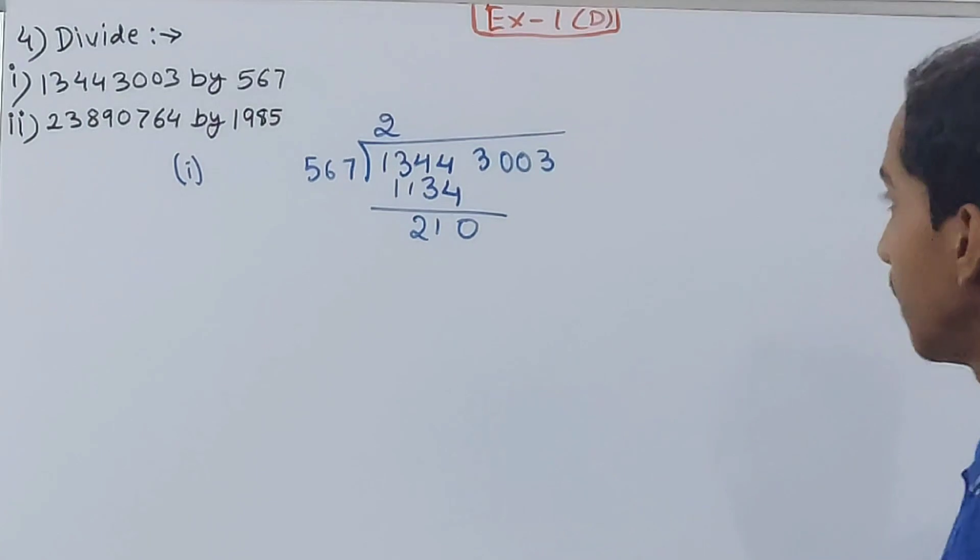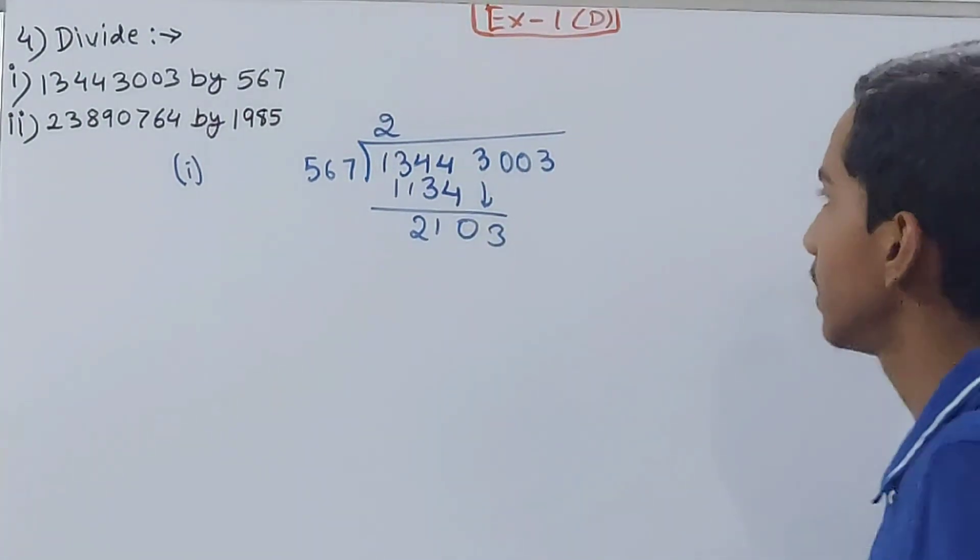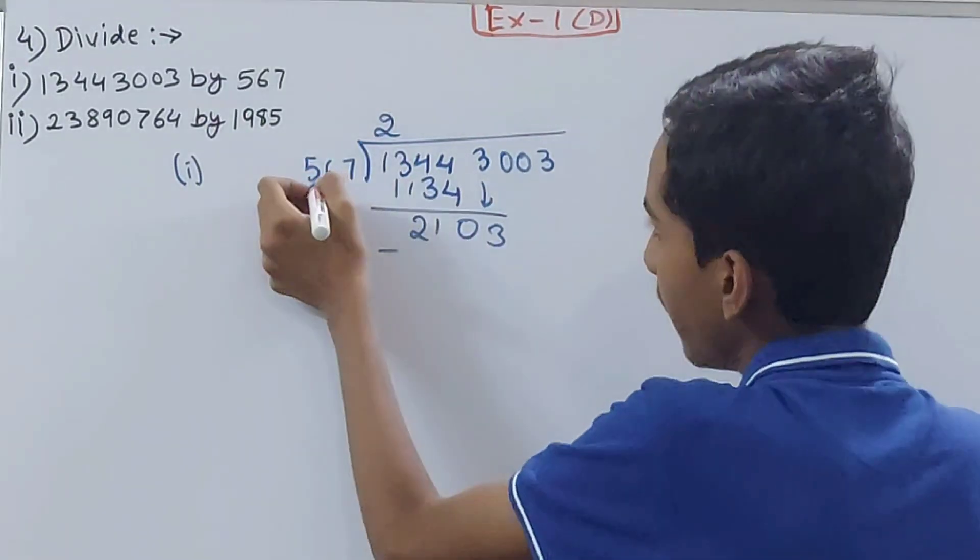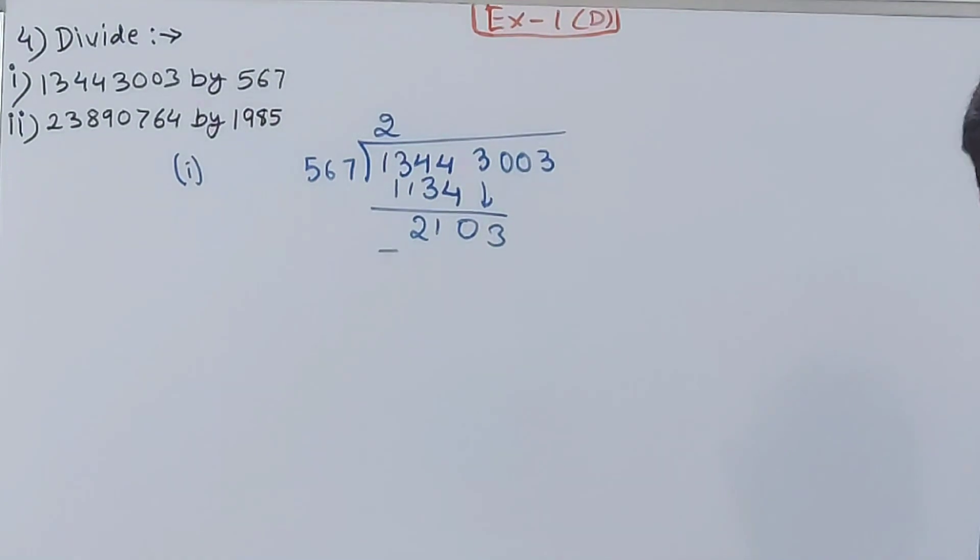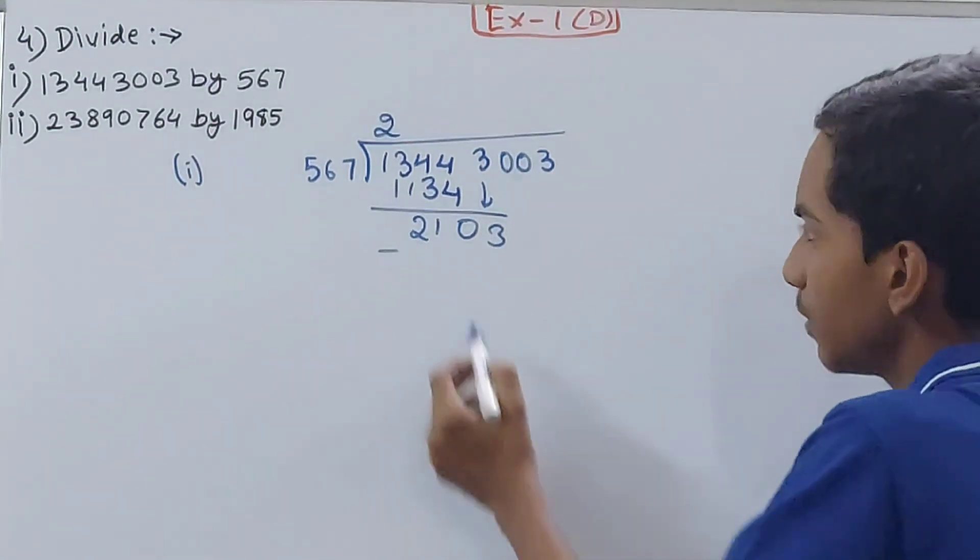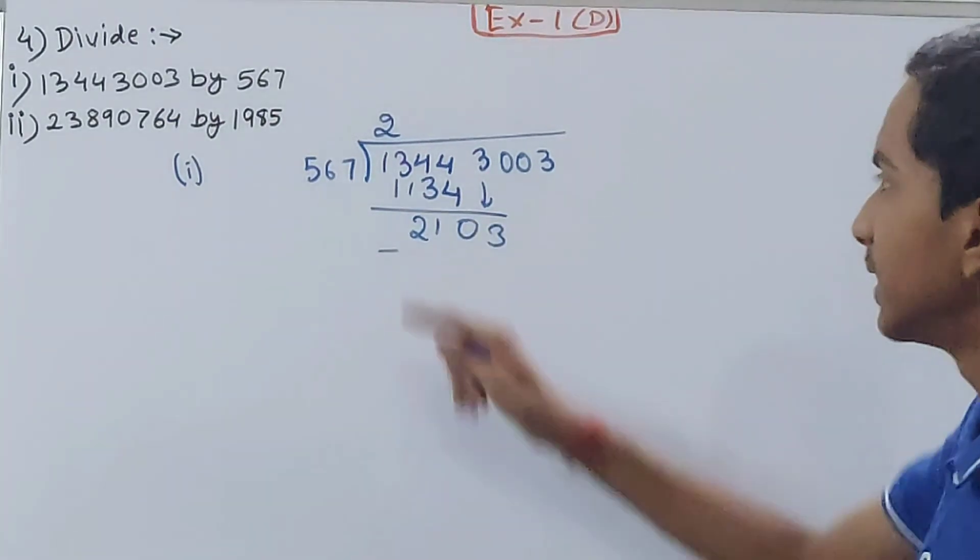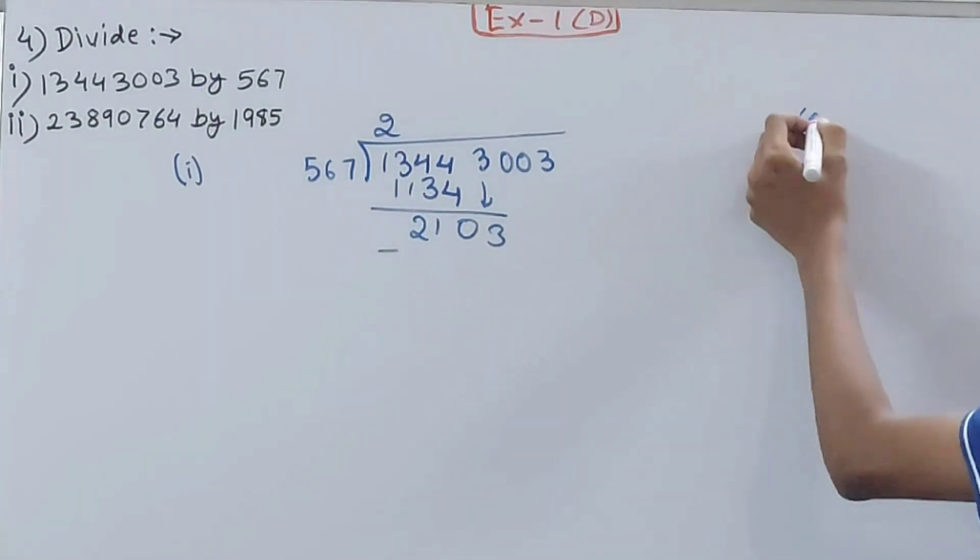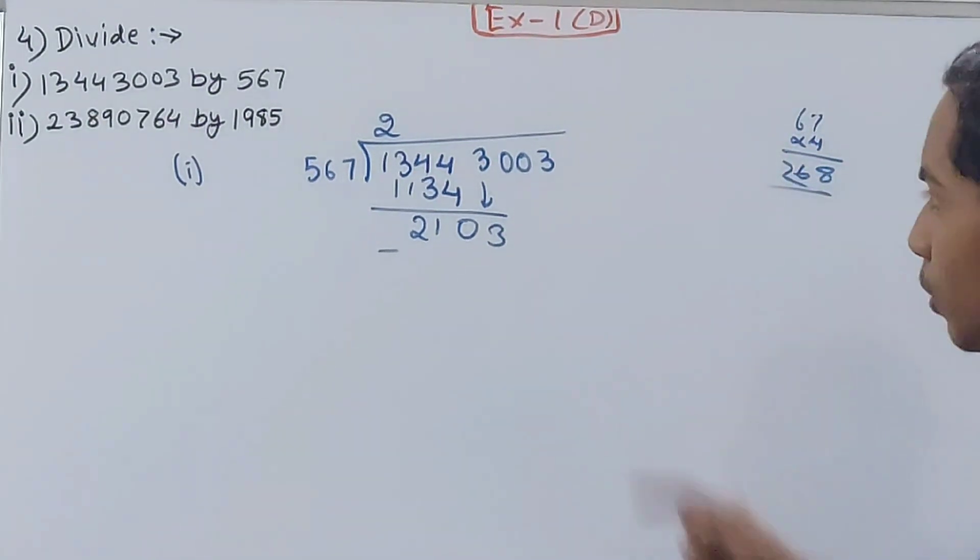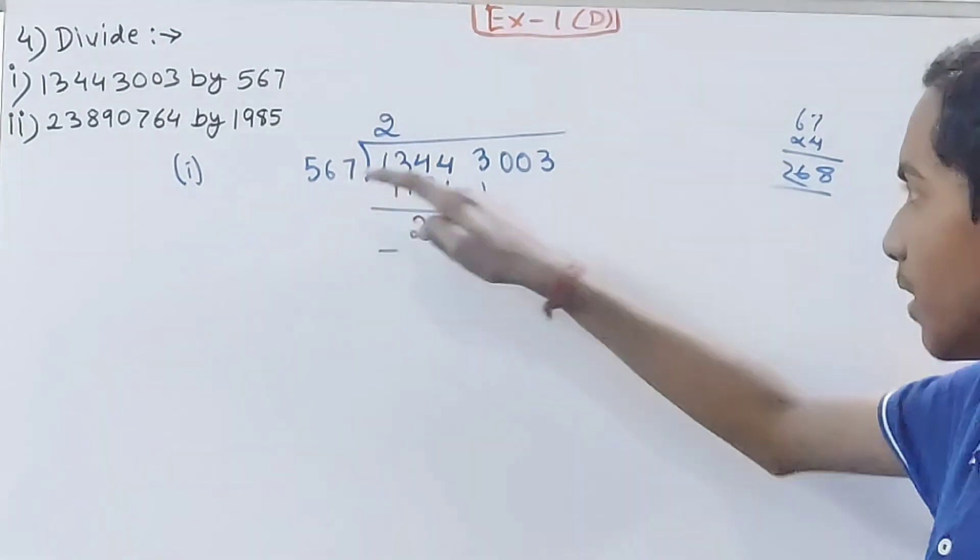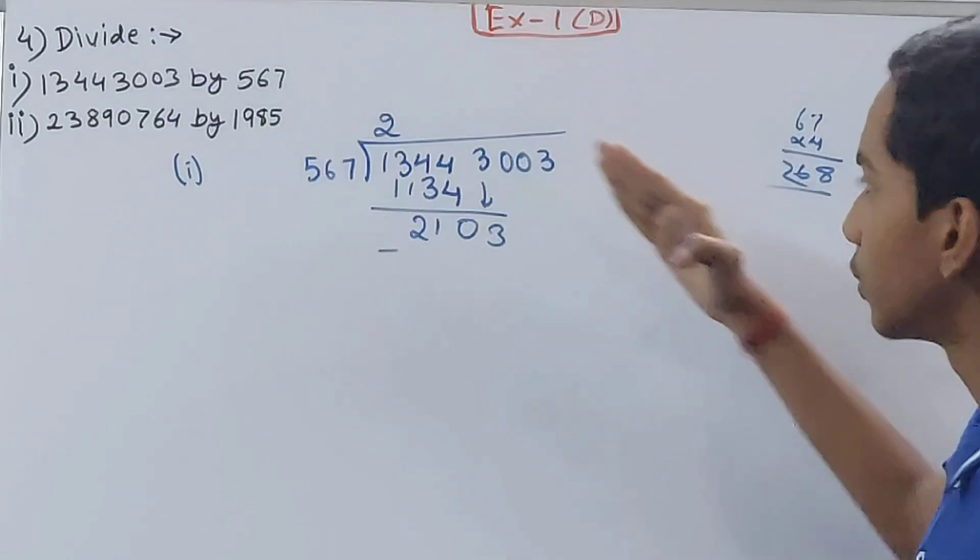You have 0, you have 1, you have 2, 1210, then bring down this 3. Now see, 5 and 21, how many times will this go? This will go 4 times, because 5 into 5 is 20. But if I take 4 times, then 67 into 4, that is 268.